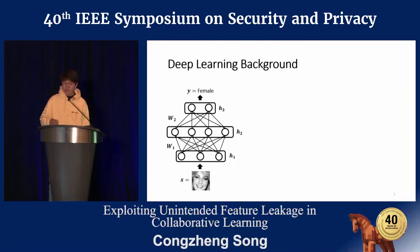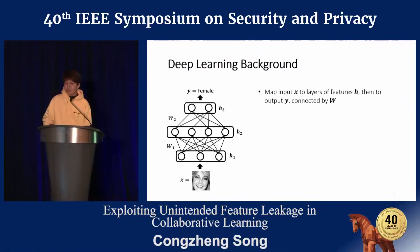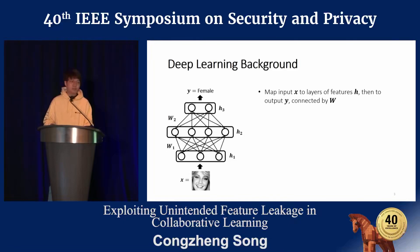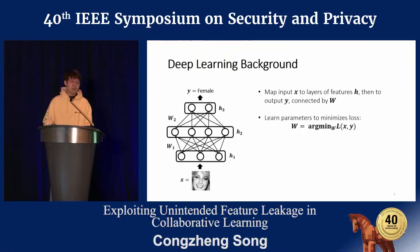I'm going to briefly introduce some background in deep learning. A deep learning model maps the input data X to layers of features H, then to the output Y. The input, features, and output are connected by the weight parameters W. For example, the input could be a face image and the output could be a female class for a gender classification task.